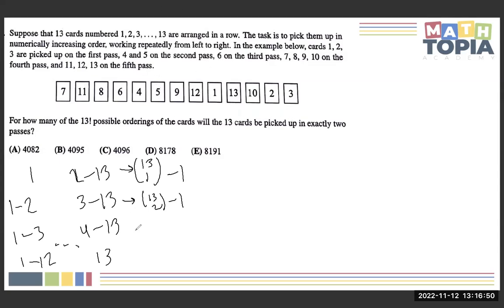And this continues. To pick 1 through 3 on the first cycle and 4 through 13 on the next cycle, it would be 13 choose 3 minus 1. And this continues until we get to 1 through 12 and 13, which is 13 choose 12 minus 1.